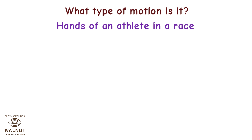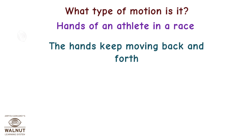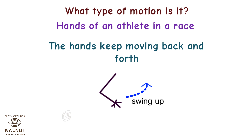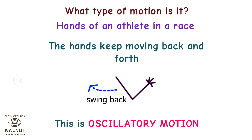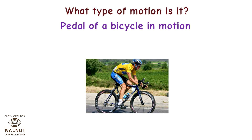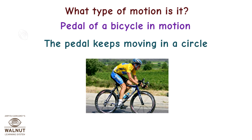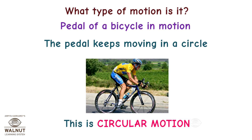Hands of an Athlete in a Race — the hands keep moving back and forth. This is Oscillatory Motion. Pedal of a Bicycle in Motion — the pedal keeps moving in a circle. This is called Circular Motion.